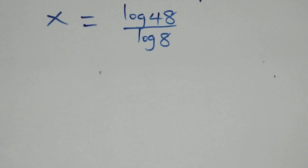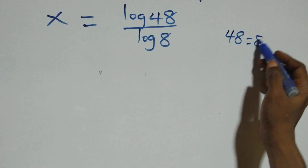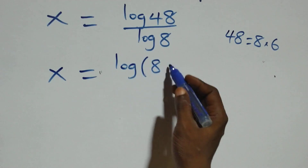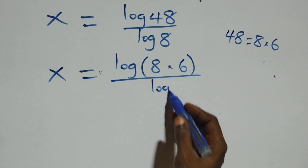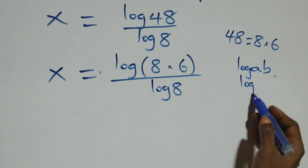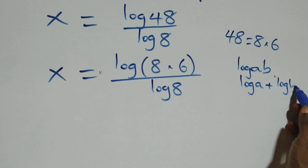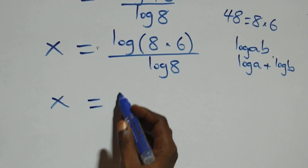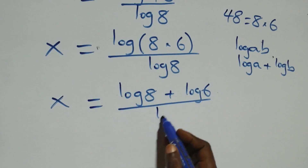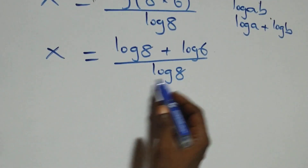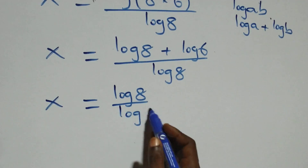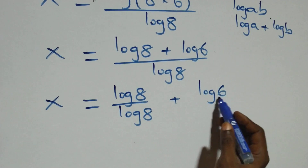Then we can express 48 as 8 times 6, so x equals log(8 times 6) over log 8. This follows the product law of logarithms: log(a times b) is the same as log a plus log b. So x equals log 8 plus log 6 over log 8. Separating into two fractions, x equals log 8 over log 8 plus log 6 over log 8.